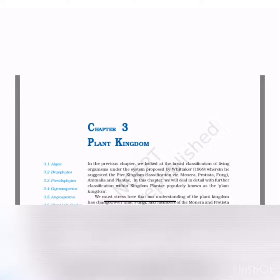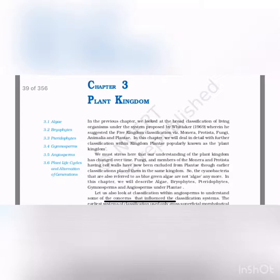We are going into Chapter 3 in the NCERT textbook Class 11 - Plant Kingdom. Let's look into a very deep aspect of the plant kingdom and its classification. Follow line by line with the NCERT book beside you. In the previous chapter we looked at the broad classification of living organisms under the system proposed by Whittaker in 1969, wherein he suggested the five kingdom classification: Monera, Protista, Fungi, Animalia and Plantae. In this chapter we will deal in detail with further classification within kingdom Plantae.